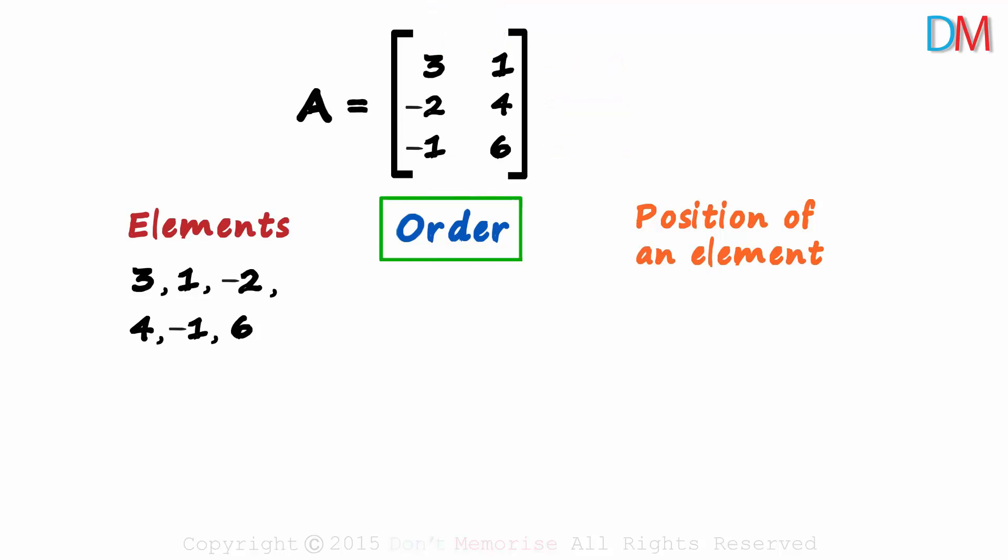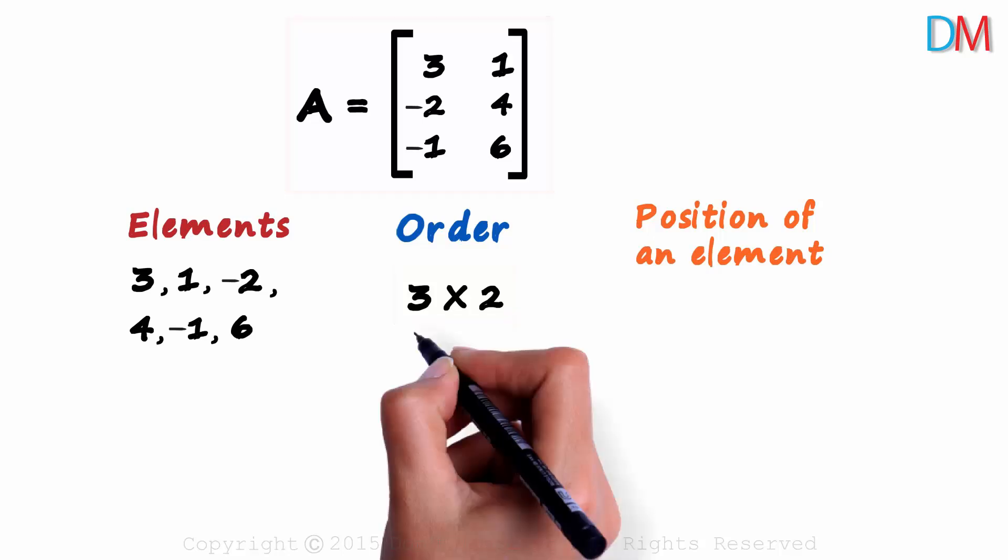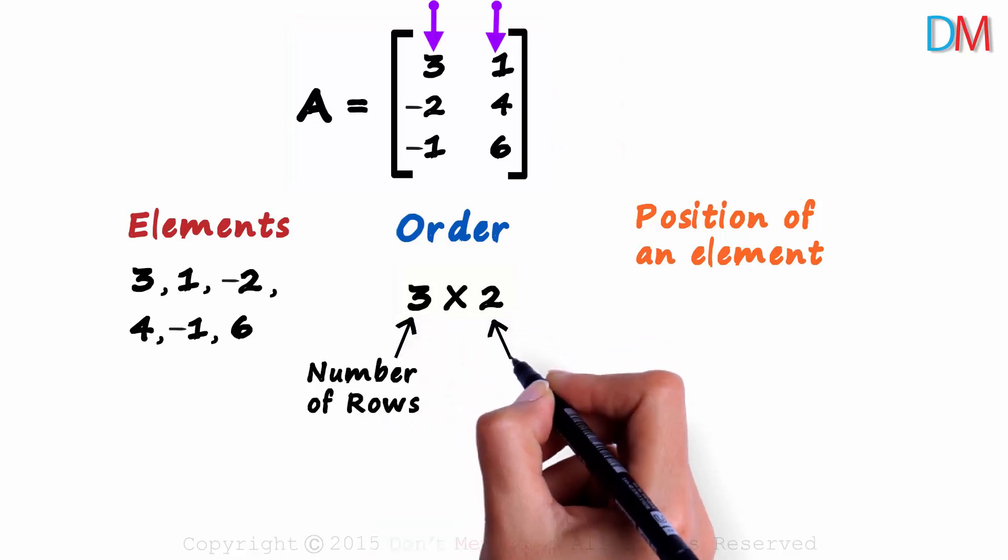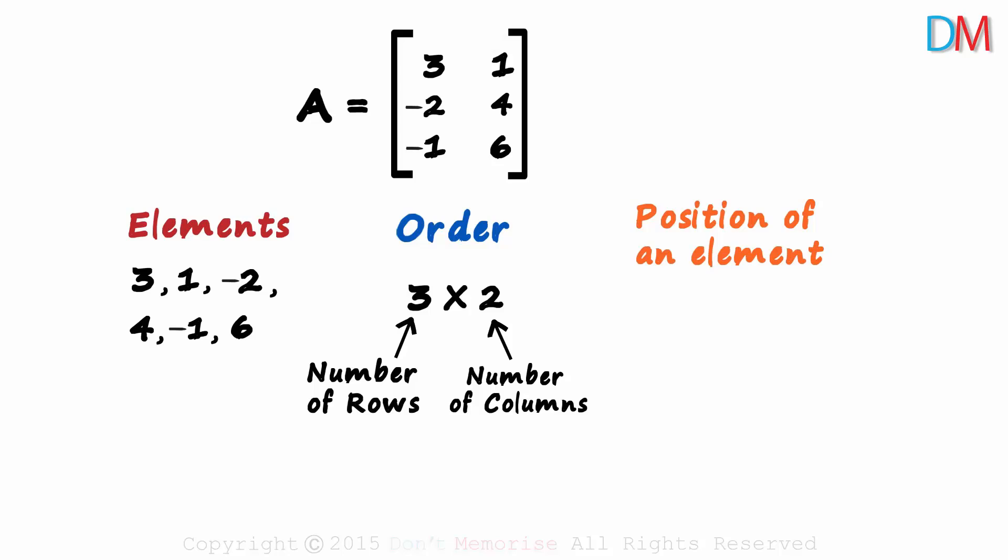What is the order of a matrix then? This matrix A, as we can clearly see, has three rows and it has two columns. Three rows and two columns. The order of this matrix is three by two. Yes, this is the order of this matrix. Don't forget, the number of rows first and then the number of columns.